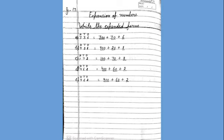Next page and write heading expansion of numbers. And leave line and write the expanded form. Then again leave one line and start from A. First you will write place value of each digit. And write 336 is equal to 300 because 3 is at 100 place plus 30 because 3 is at 10s place plus 6 because 6 is at 1s place. Now, come on next page.